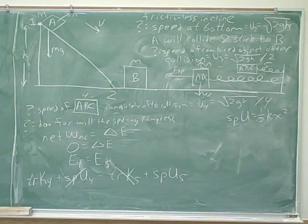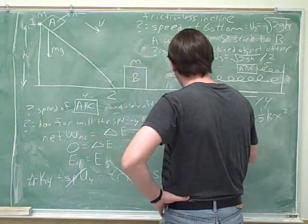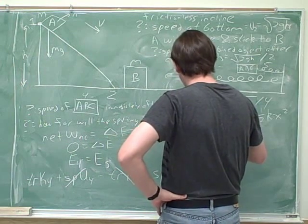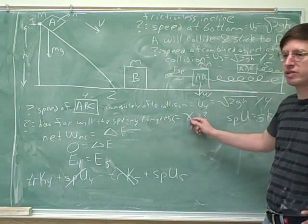So we're solving for x sub 5 squared? That's right. It's always good to say what the question is. We want to know this maximum compression of the spring.